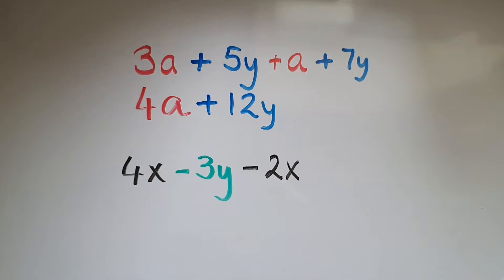And looking at the other one, we've got four x take away three y take away two x. So four x take away two x leaves us with two x. And just take away three y because we haven't got any other y's or negative y's.